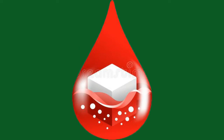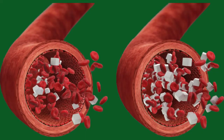High blood glucose levels can cause widespread damage to tissues and organs, including those that play a key role in maintaining healthy blood pressure. For example, damage to the blood vessels and kidneys can cause blood pressure to rise. Hypertension and diabetes often occur together and share multiple risk factors and causes, and having one condition increases a person's likelihood of developing the other.